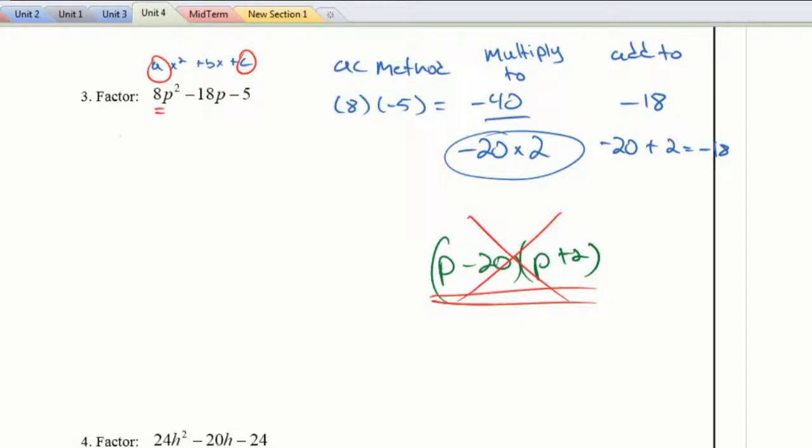So we're going to use the decomposition. I'm going to take my middle term, this negative 18, and I'm going to break it down into the two factors I chose here, 20 and 2. So I'm just going to rewrite 8P squared and the minus 5. And then I'm going to break down the middle term into negative 20P and positive 2P.